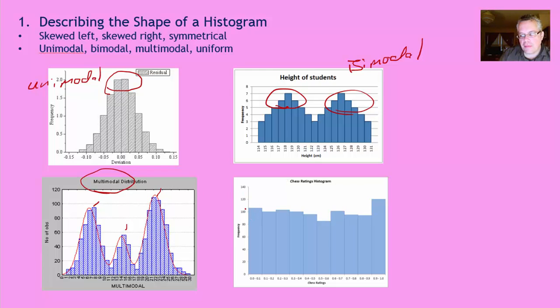This final example is an example of a uniform distribution. It's not exactly the same, but it's pretty close to being same across all the categories. So all these categories are approximately a hundred. So we would say this last one is an example of a uniform distribution.